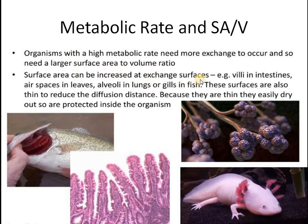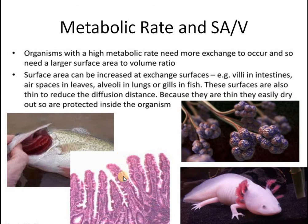Surface area can be increased at exchange surfaces — that is, where the exchange of carbon dioxide and oxygen takes place or where the absorption of nutrients is occurring. For instance, villi in the intestine are finger-like projections in the small intestine. They make projections to increase the surface area to volume ratio. If you increase the surface area to volume ratio, you are actually increasing the rate of absorption of amino acids, glucose, vitamins, and water.